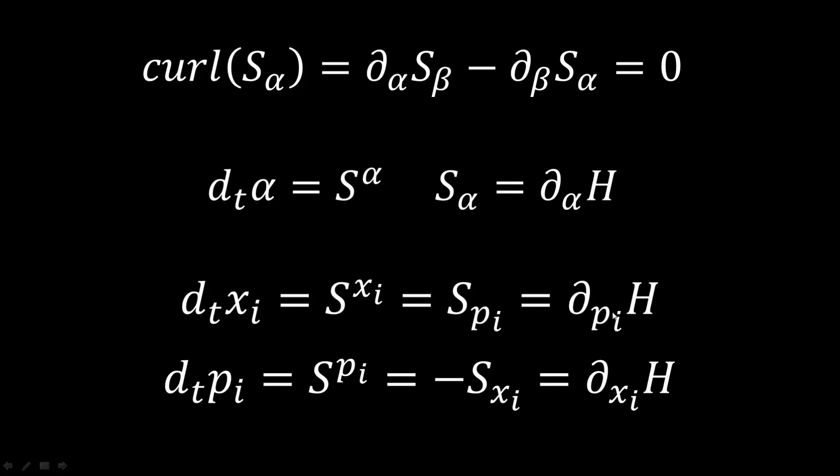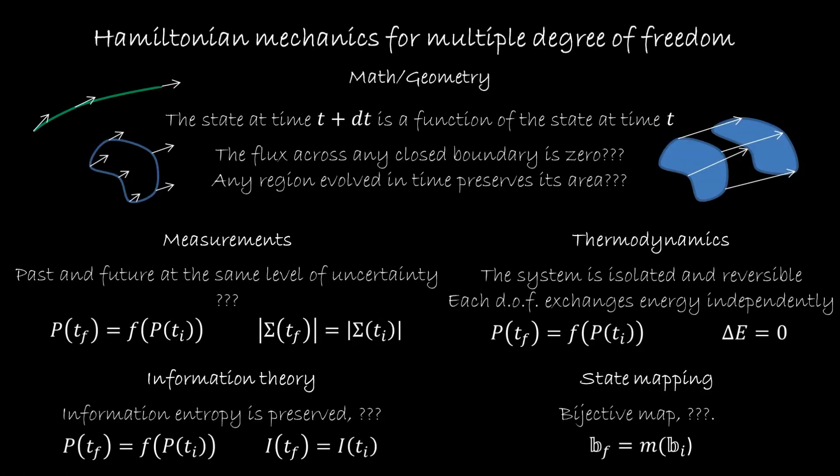So we saw that that approach generalizes very easily and it's easy to understand. So we can sort of remap what we have. We still don't know exactly what happens to the flux and the area. But we have seen that the thermodynamic part generalizes. And then in the next section, we'll have to see how the measurement, the information theory and the state mapping generalizes to multiple degree of freedom.